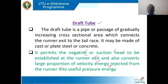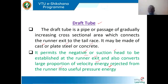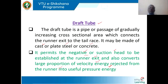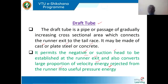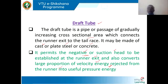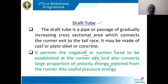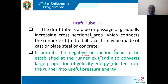The draft tube is made of cast steel, plate steel, or concrete. For very large Kaplan turbines, a concrete draft tube may be used; for very small Kaplan turbines, cast iron or plate steel draft tubes are used. It is a gradually increasing cross-sectional area pipe. Its purposes are: first, it permits a negative or suction head to be established at the runner exit; second, it converts a large proportion of velocity energy rejected from the runner into useful pressure energy. The draft tube theory will be discussed later.